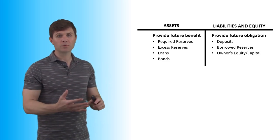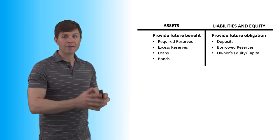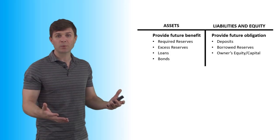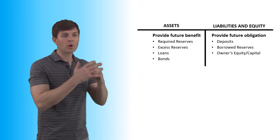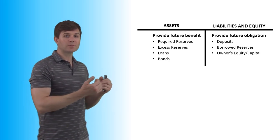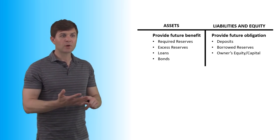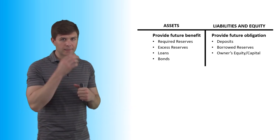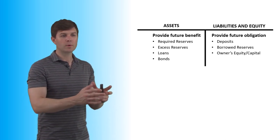The borrowed reserves, whether from another bank or from the Federal Reserve, have to be paid back. And finally, the owner's equity — financial capital — also has to be paid back to the owner. So these are all the obligations that the bank has. Now on the other side we have the assets, which provide future benefit. These are the required reserves just sitting there in the bank; they can be used to repay but aren't really something that's owed.